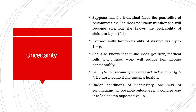Under conditions of uncertainty, how does the individual's utility derived from income add up? Suppose the individual faces the possibility of becoming sick. They do not know whether they will become sick, but know that the probability of sickness is P (between 0 and 1). Consequently, the probability of staying healthy is 1 minus P. If they do get sick, medical bills and missed work will reduce their income considerably. We have two income levels: I_s (income if sick) and I_h (income if healthy), where I_h > I_s.